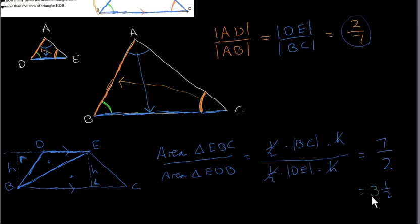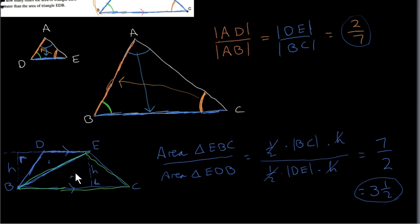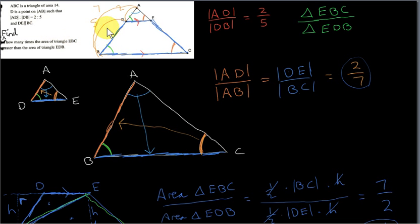We get 7 over 2, or 3 and a half. This means triangle EBC is 3 and a half times the area of triangle EDB. Notice there is one piece of redundant information in this problem: the area of triangle ABC being 14 — we don't need to know that to answer the question.